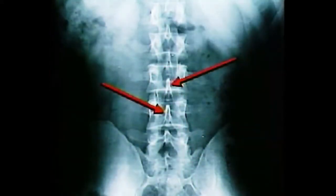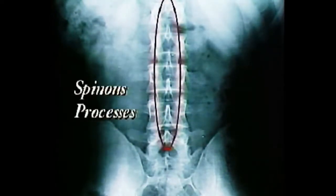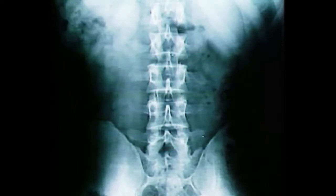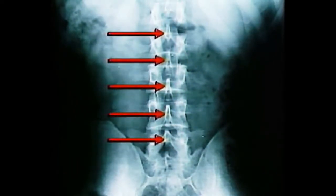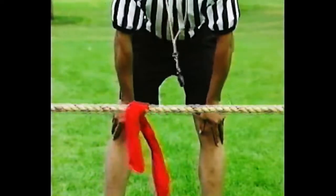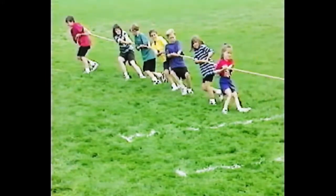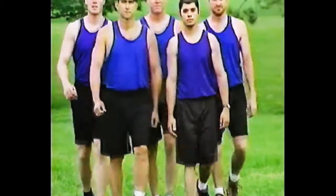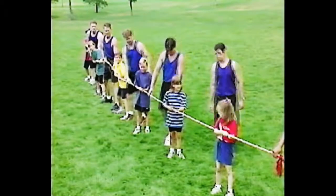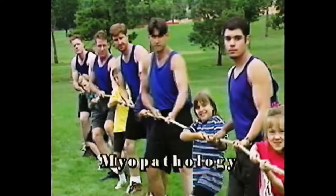Muscles can be involved too. Attached to each spinal bone are layers of muscles that support the spine, hold each spinal bone in place, and help maintain proper posture. When these muscles are healthy and equally matched, proper spinal balance can be achieved. X-ray views of the spine reveal small projections on the back of every spinal bone — called spinous processes — to which powerful muscles attach. The spinous process of each bone should be centered and in alignment with the one above and below it.